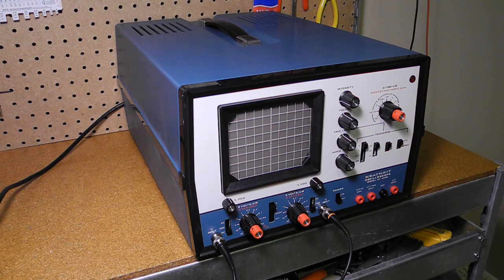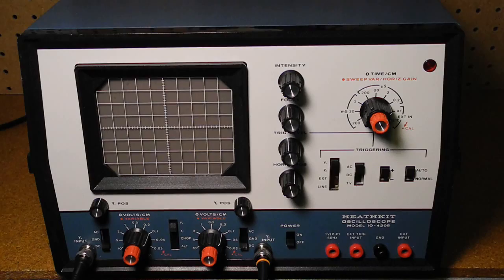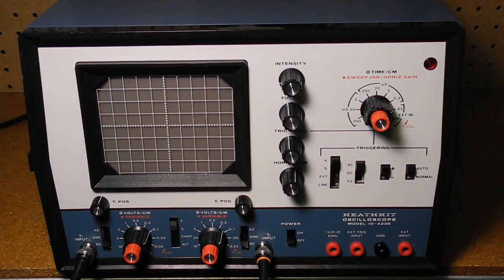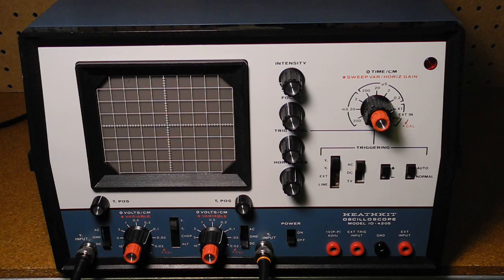This is a dual channel scope meaning it provides two independent channels although they share the same horizontal time-based circuit. The display is 8 x 10 cm. The vertical sensitivity went as low as 10 millivolts per centimeter with 11 calibrated voltage ranges in a 1-2-5 sequence. The horizontal sweep rate went from 200 milliseconds to 0.2 microseconds per division in seven ranges.